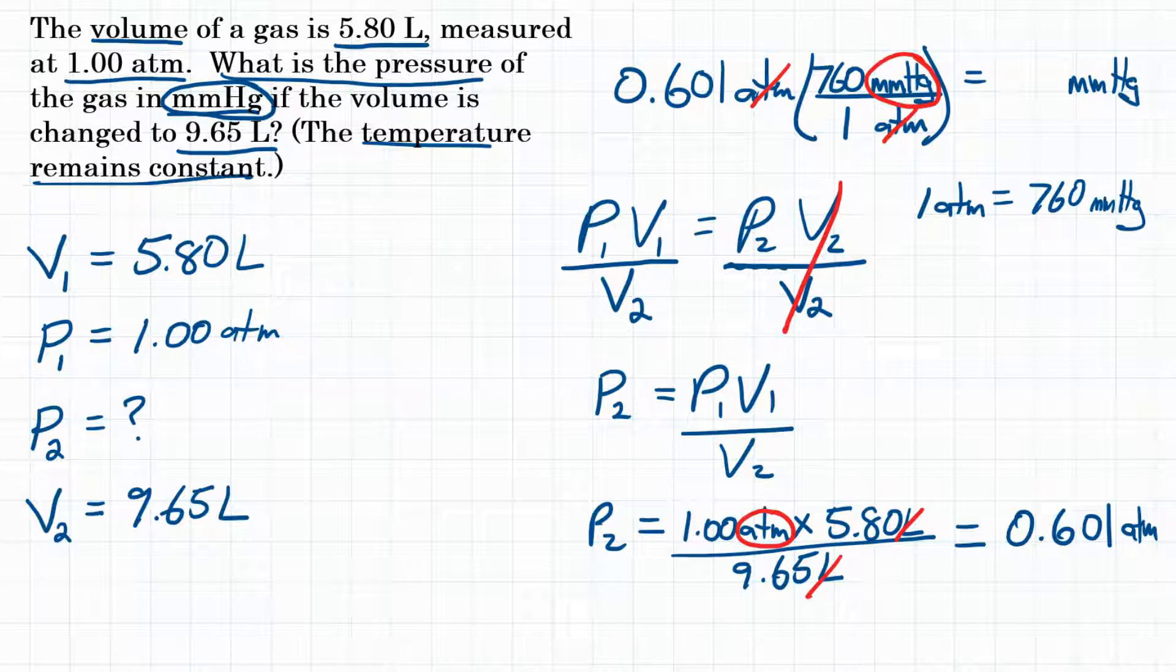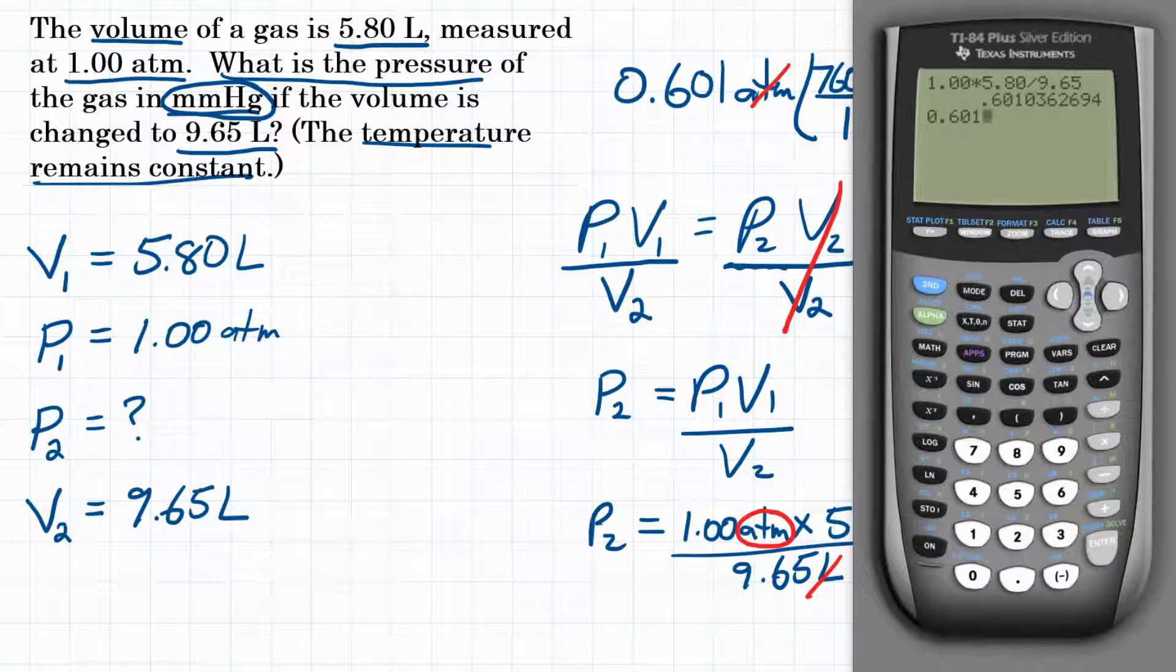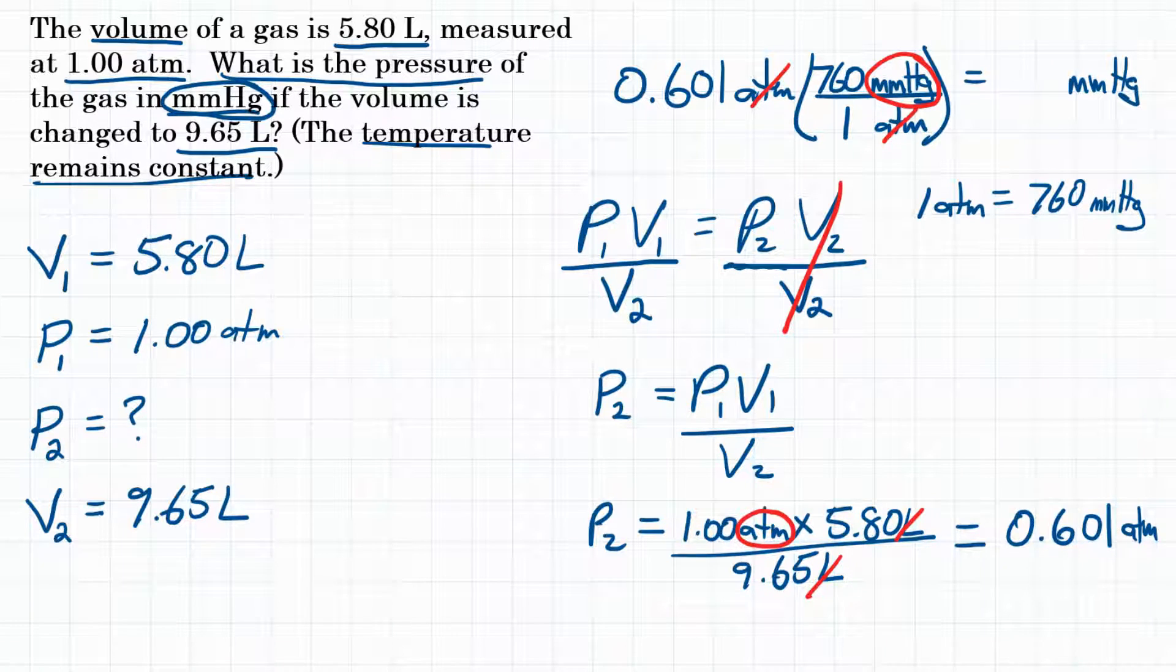So let's do the math here. Let's get our calculator. We're going to take our 0.601, and we're going to multiply by 760 over 1. So we can just multiply by 760, since dividing by 1 won't change anything. Hit enter, and we get 456.76. Let's round again to three significant figures, so we would get 457.